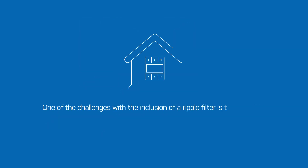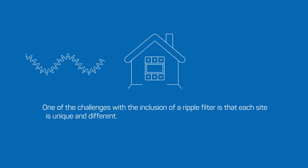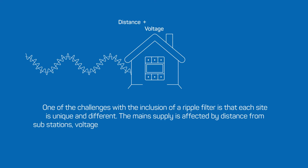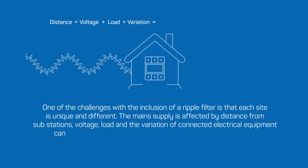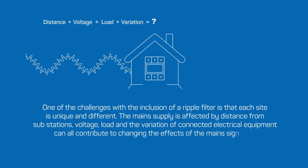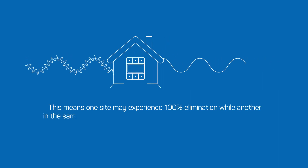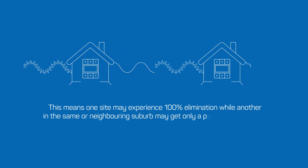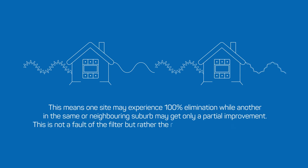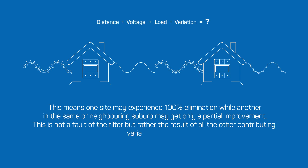One of the challenges with the inclusion of a ripple filter is that each site is unique and different. The main supply is affected by distance from substations, voltage, load, and the variation of connected electrical equipment, all of which can contribute to the changing effects of the main signaling. This means one site may experience 100% elimination while another in the same or neighboring suburb may only get a partial improvement. This is not the fault of the filter but rather the result of all the other contributing variables involved.